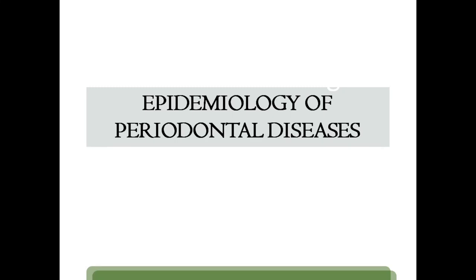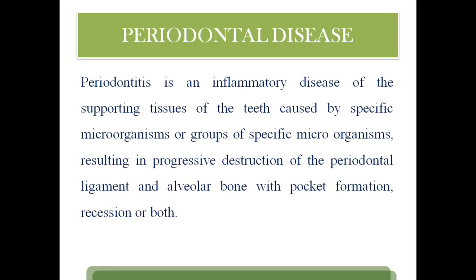So let's see what is epidemiology of periodontal diseases. Periodontal diseases, like periodontitis, is an inflammatory disease of the supporting tissue. We know what the supporting tissues are — gums and other gingival elements. There will be inflammation caused by specific microorganisms or a group of microorganisms, which results in progressive destruction of the periodontal ligament and alveolar bone, resulting in pocket formation and recession.